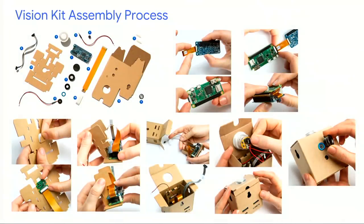The assembly process for the Vision Kit is very similar to the Voice Kit. You hook up the Raspberry Pi with the Vision Bonnet via that orange flex cable, stack them together, fold the cardboard, insert the module into the middle — almost like putting an engine in a car — and hook up the button. The first time I built it took about 40 minutes; the second time only 20 minutes. It's very simple. I even made a video tutorial on YouTube for those who don't want to read the instructions.